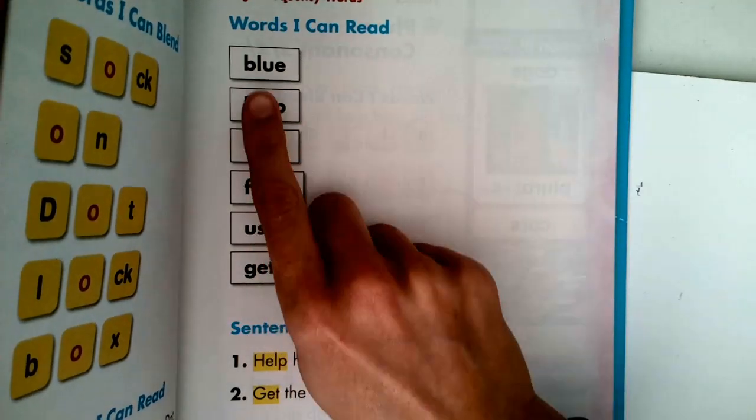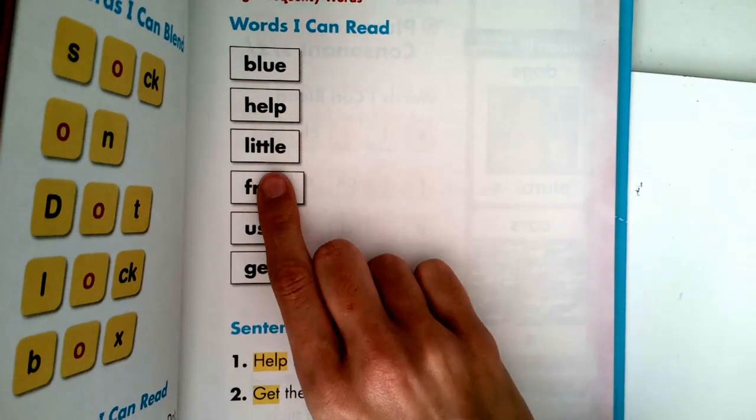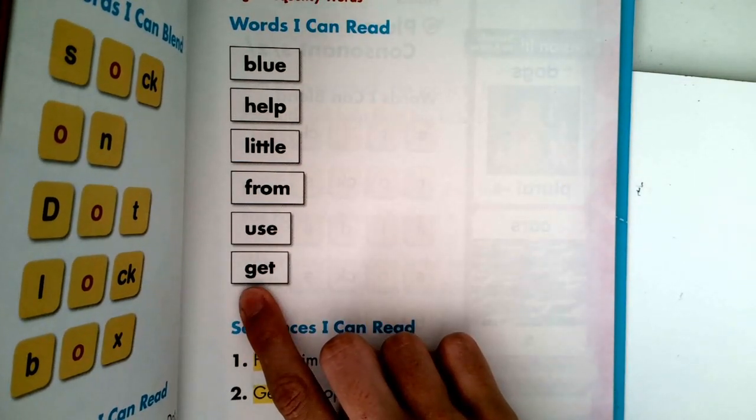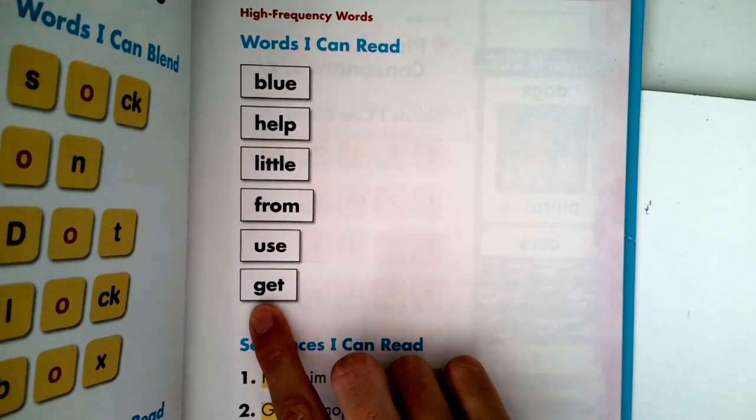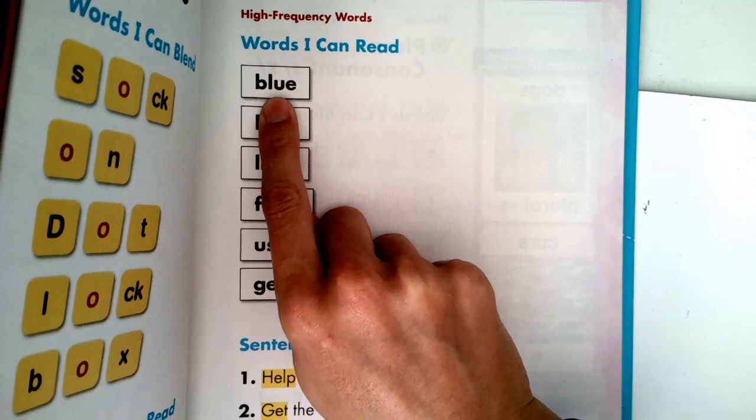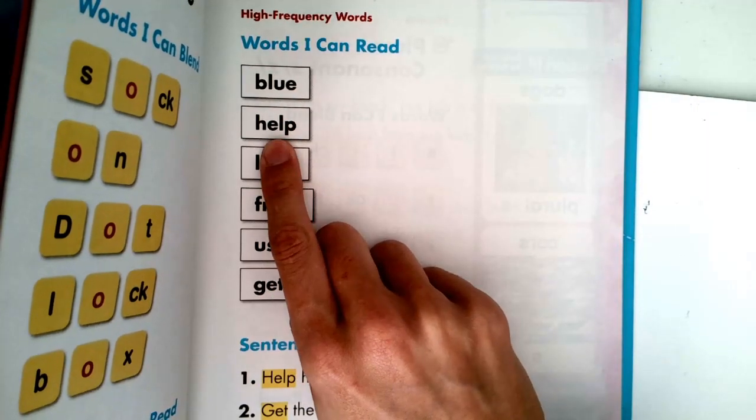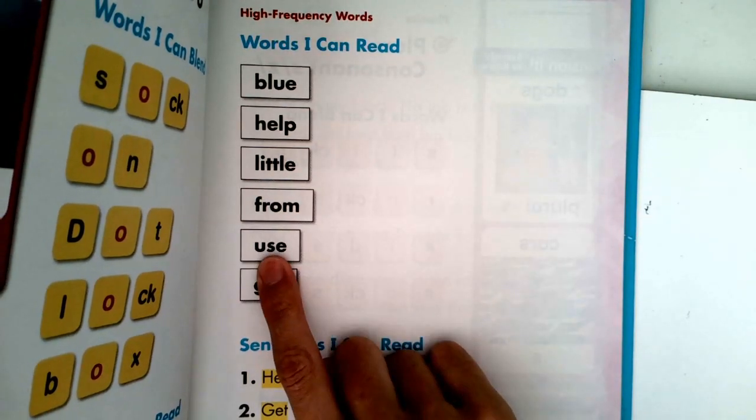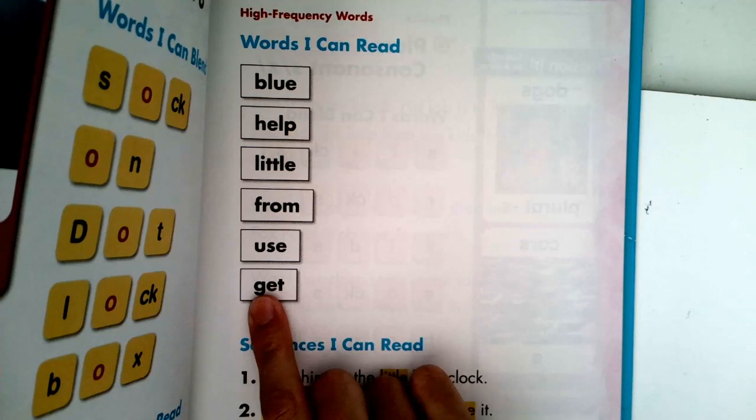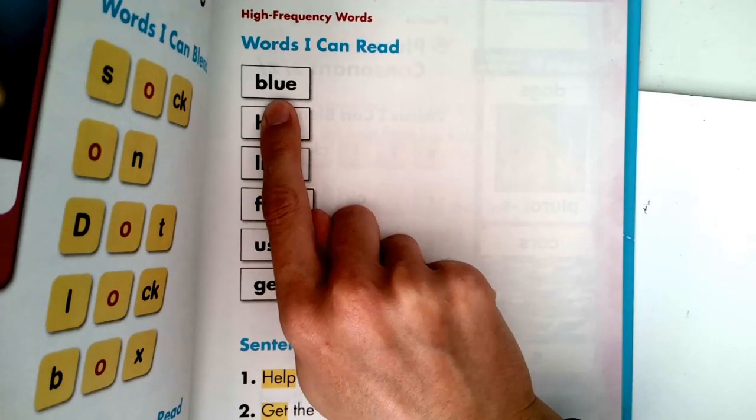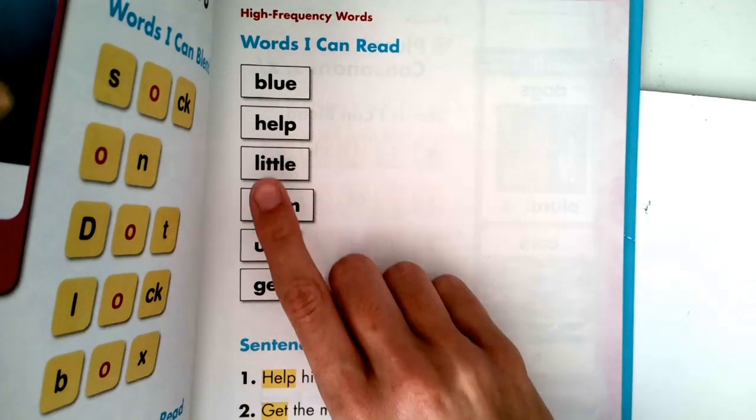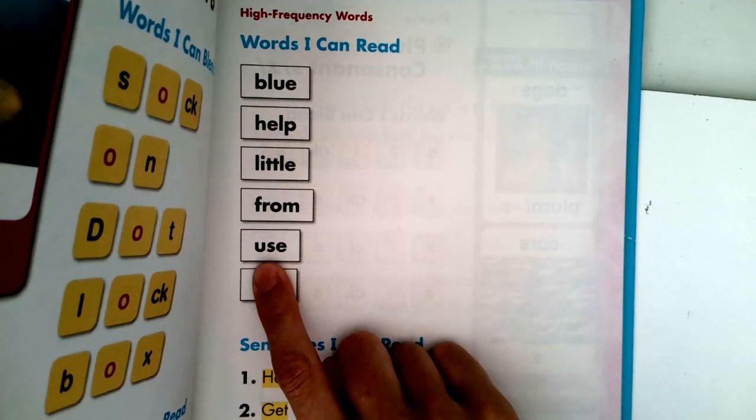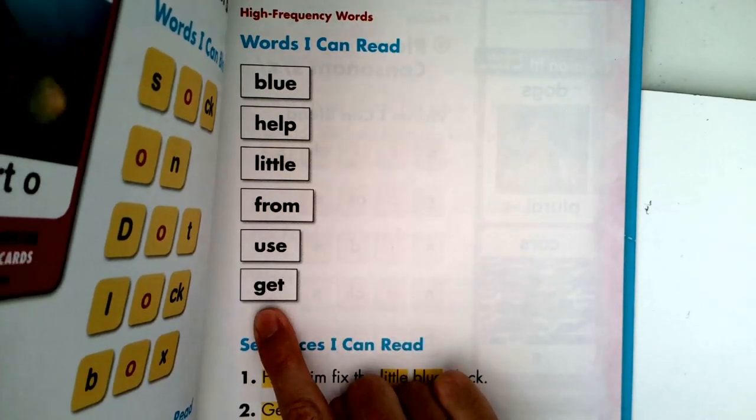Good. Let's go through them one more time. Blue, help, little, from, use, and get. Alright, your turn. There's not going to be any Mrs. Garris this time. You tell me the words when I point. Ready? Do it one more time. Blue, help. Good job. Little, from, use, and get. Nice work.